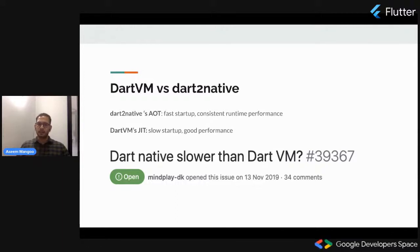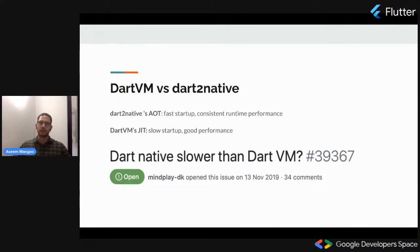On the other hand, dart2native uses AOT compilation, which is recommended for production use cases. It has fast startup but consistent runtime performance. This issue is currently active, and people are actively trying to make this performance difference less noticeable.